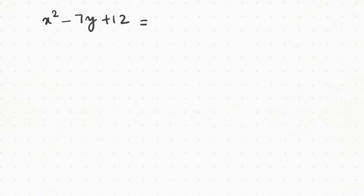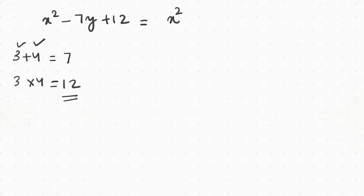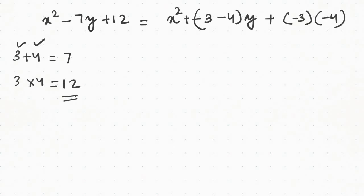If we add the negative one: minus 3 plus minus 4 gives minus 7, and minus 3 into minus 4 gives plus 12. So we get x minus 3 into x minus 4.